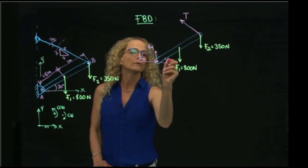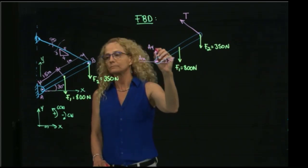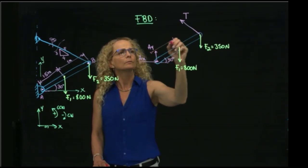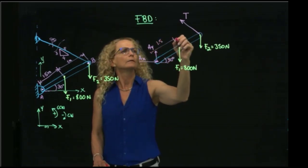Let's put our dimensions. We have 30 degrees over here. We know this distance, which is 1.5, and this one, that is 1.